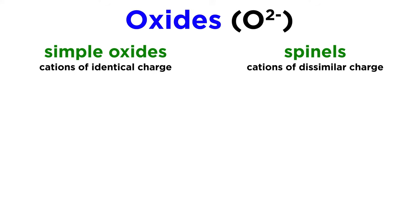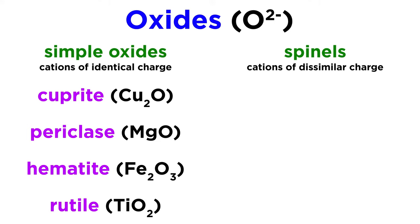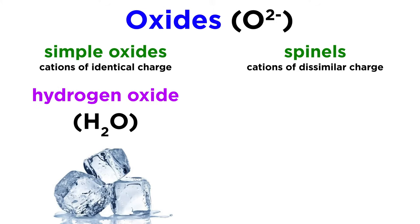Some examples of simple oxide minerals are cuprite, a monovalent copper oxide, periclase, a divalent magnesium oxide, hematite, a trivalent iron oxide, and rutile, a tetravalent titanium oxide. Another instantly recognizable monovalent oxide mineral is hydrogen oxide, which is more commonly known as ice.